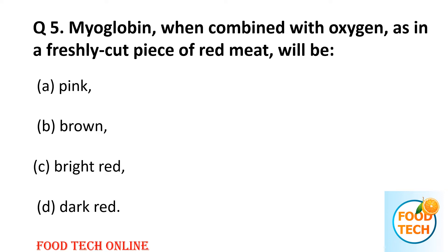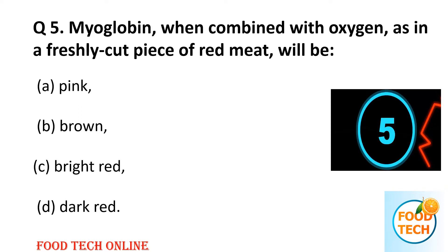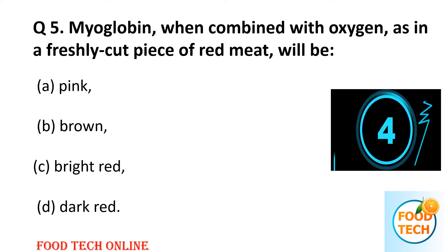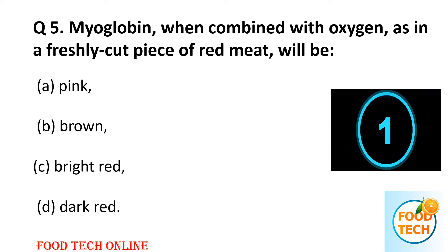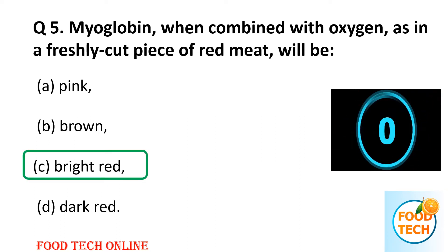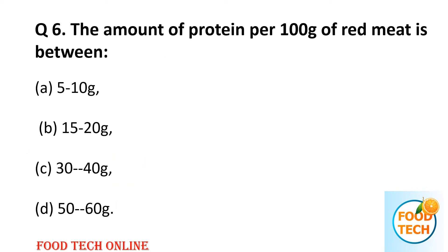Question 5: Myoglobin, when combined with oxygen as in a fresh cut piece of red meat, will be: A: pink, B: brown, C: bright red, D: dark red. Answer: C, bright red.